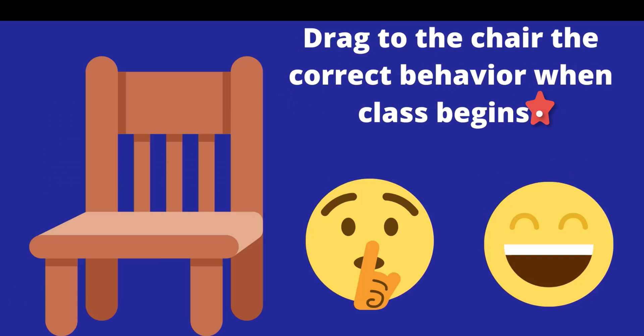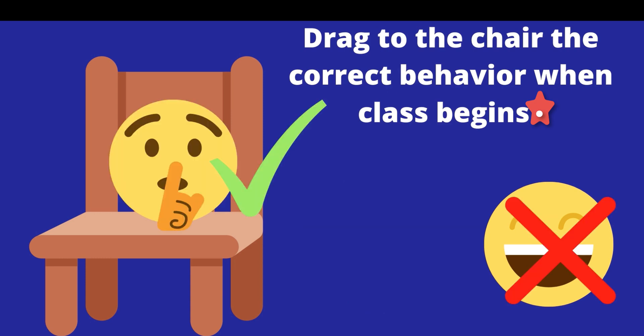Now drag to the chair the correct behavior when class begins. Should you be quiet and a great and good listener, or should you be talking and laughing when class begins? You should be very quiet and in ready and learning position. That is what a good learner does.